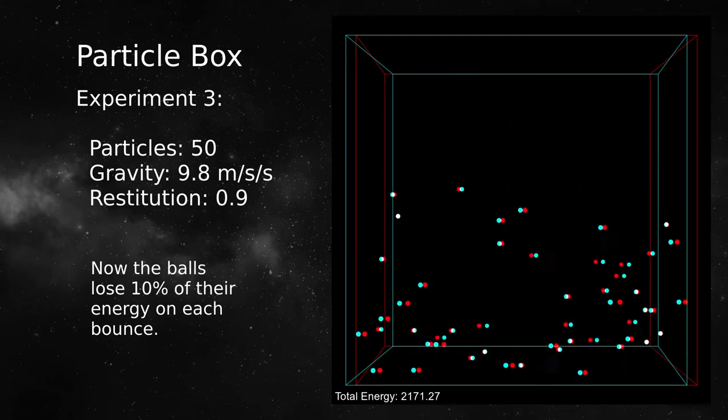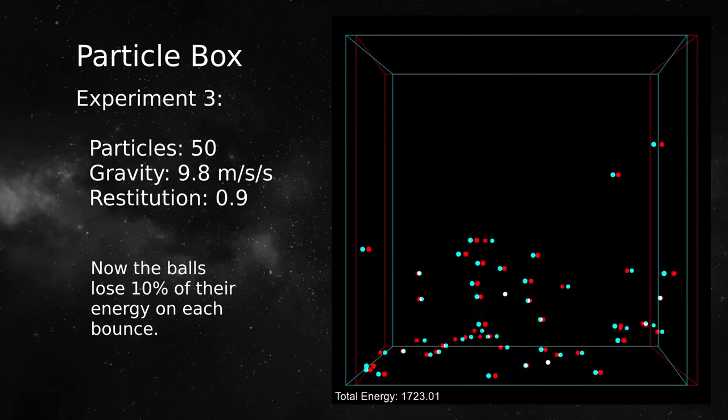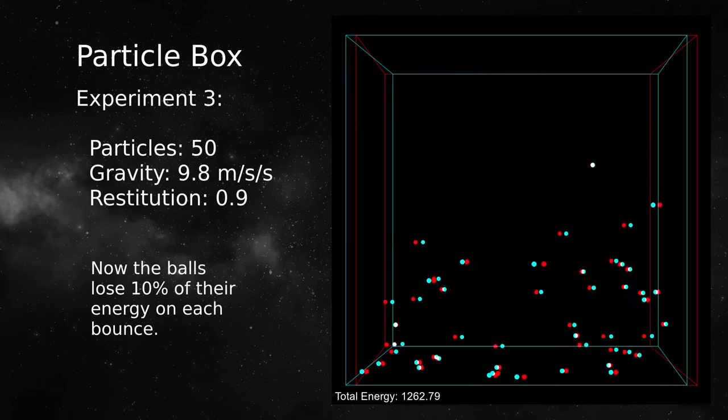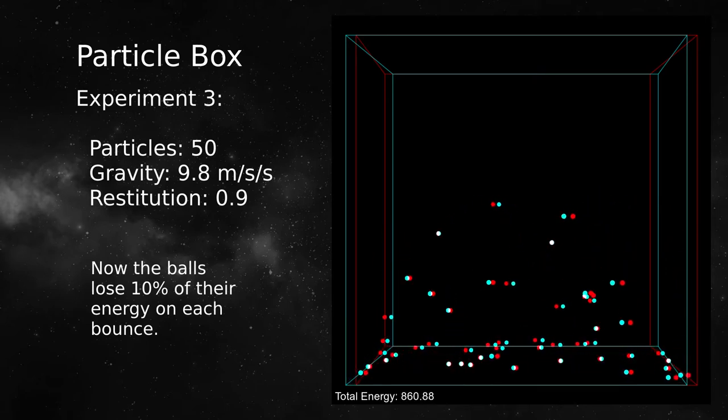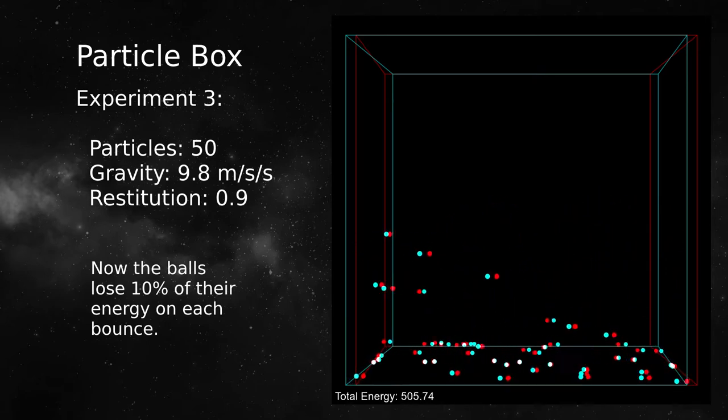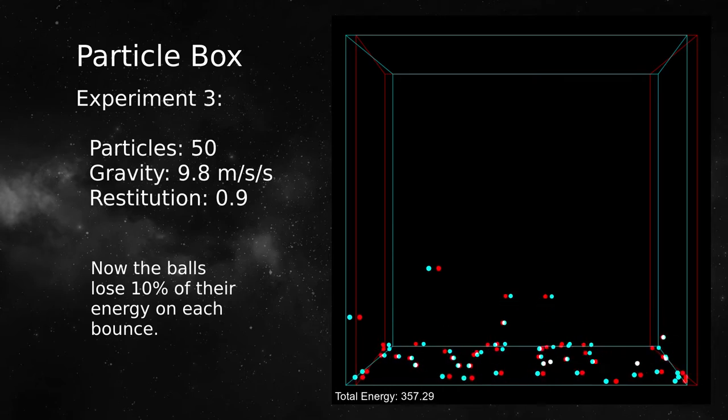Now the restitution value is 0.9, meaning a particle loses 10% of its energy on each bounce. This is more like real life because almost no bounces are perfectly elastic in reality.